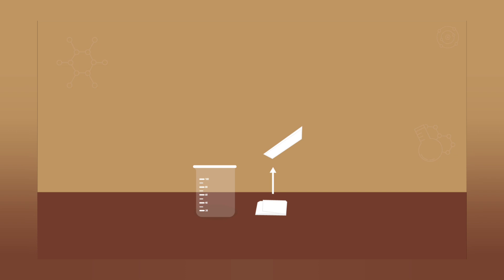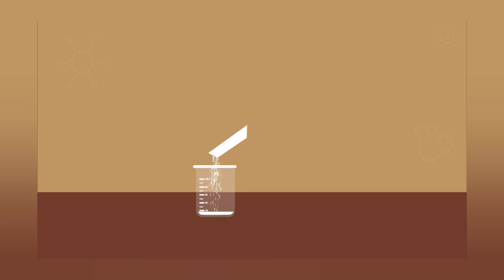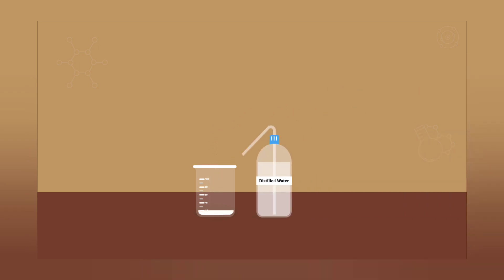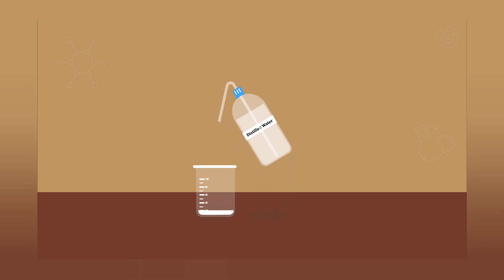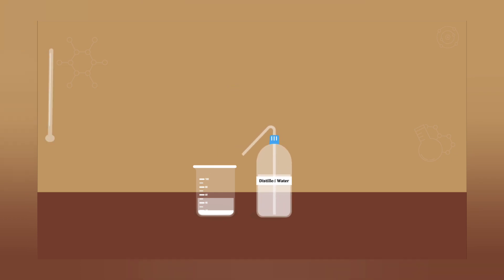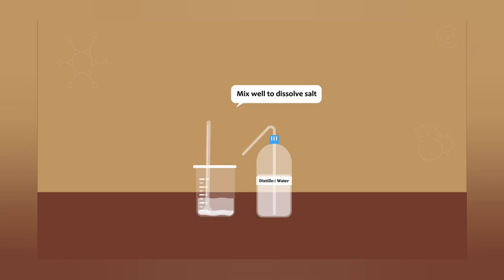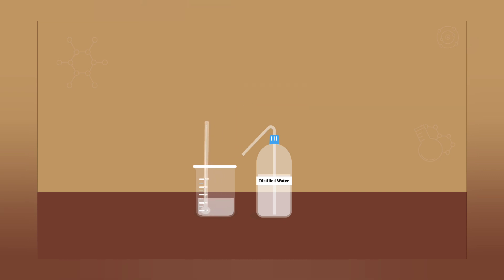Glucose is a simple sugar with the molecular formula C6H12O6. It is overall the most abundant monosaccharide, a sub-category of carbohydrates. Glucose is mainly used by plants and most importantly in photosynthesis, from water and carbon dioxide using energy from sunlight, where it is used to make cellulose in cell walls — the most abundant carbohydrate in the world.